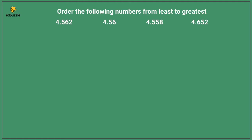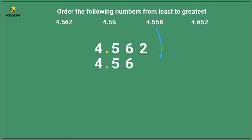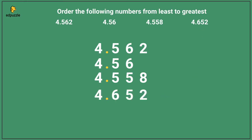When putting numbers in order, I'm really just comparing multiple numbers at once. So the first thing I need to do is stack the numbers on top of each other, making sure the decimal point in each number is lined up. I can write 4.562, then 4.56, then 4.558, and finally 4.652.